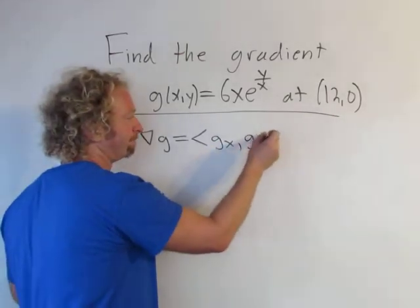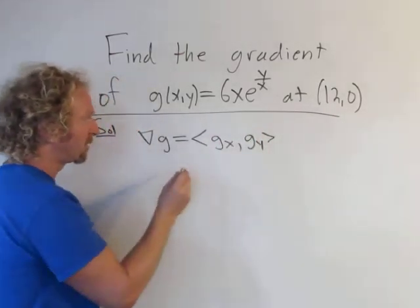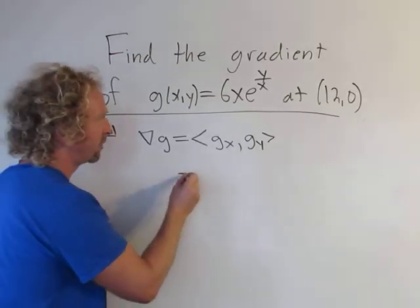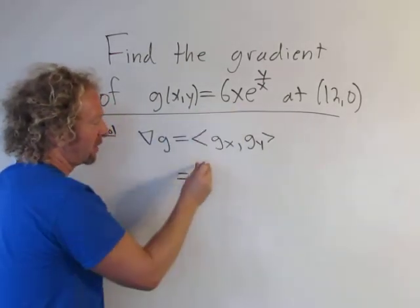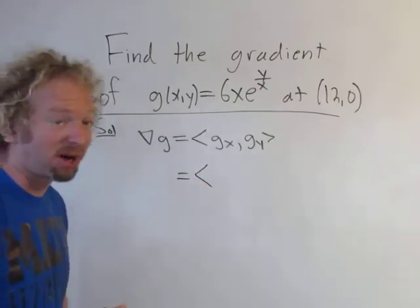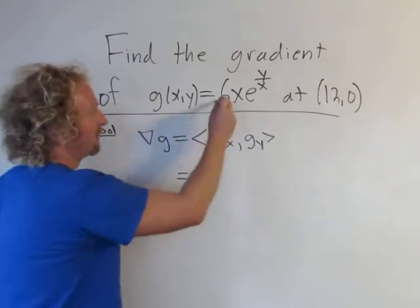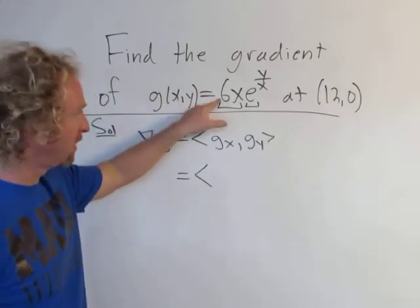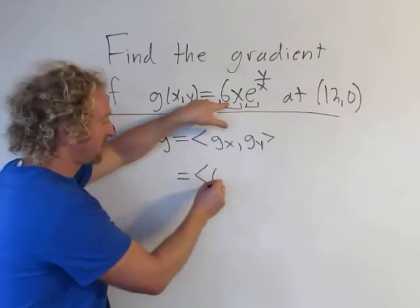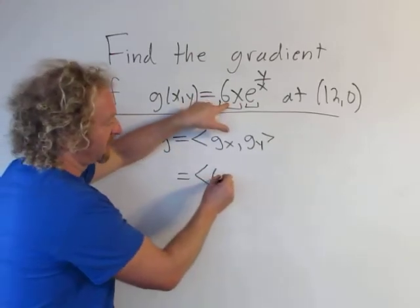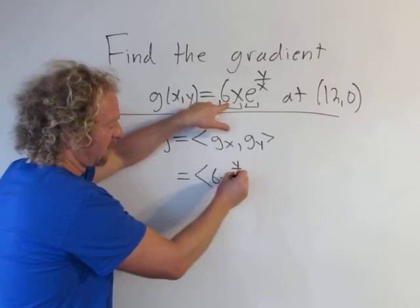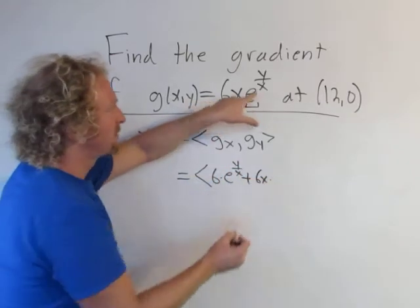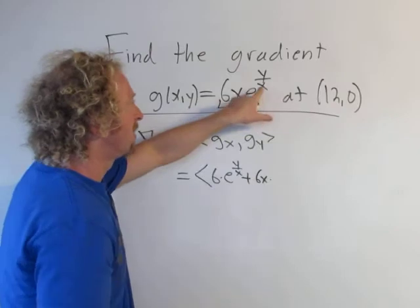Now we just compute the partials. We have to be careful here — taking the partial with respect to x, we do have to use the product rule. Think of this as the first factor and this as the second, so the derivative of the first factor is six times the second.